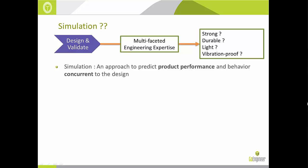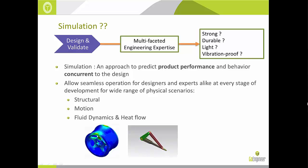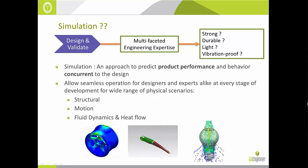Now enter simulation. What we are proposing is a method to study design parameters and performance goals in a virtual environment — a 3D tool that tests product performance and behavior concurrent to the design process. You only need to understand the physical conditions the product would face during operation. It tests performance virtually for structural scenarios — predicting if a part will break, bend, buckle, or collapse — as well as motion, fluid dynamics, and heat flow.